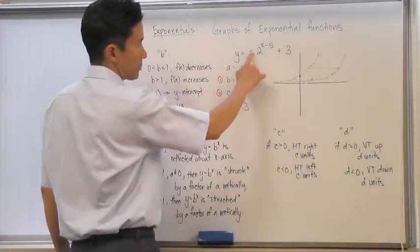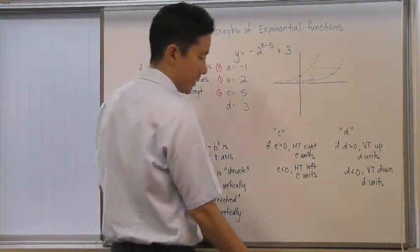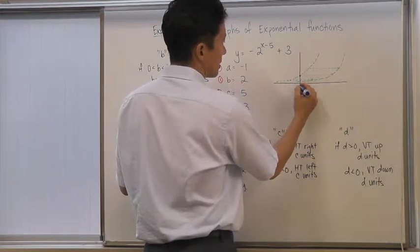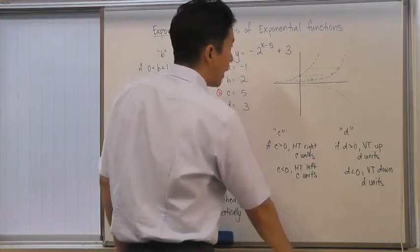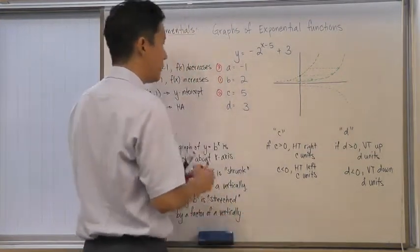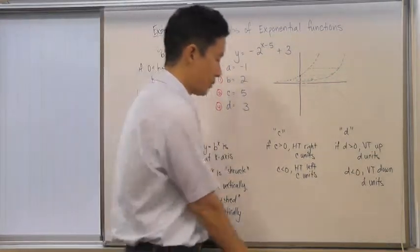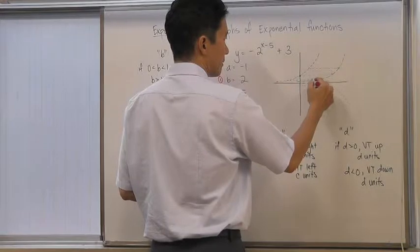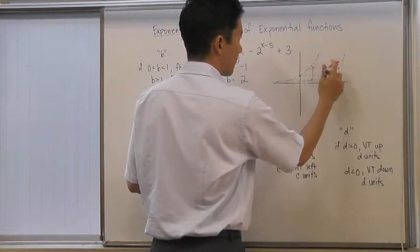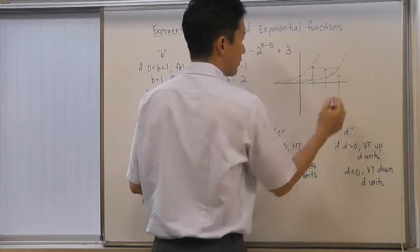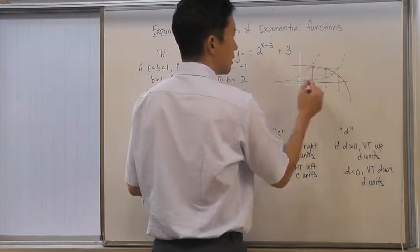After those two transformations, we apply a. Since a is negative 1, we reflect the graph about the x-axis, so the increasing curve now decreases. Finally, we apply d, which is 3, and move the entire graph up 3 units. So the function ends up shifted, reflected, and translated upward.